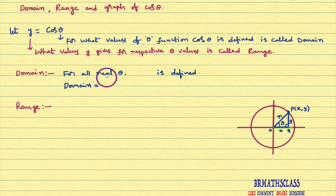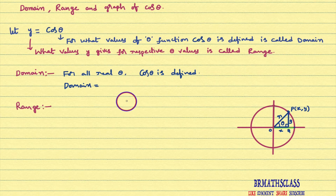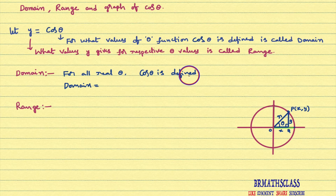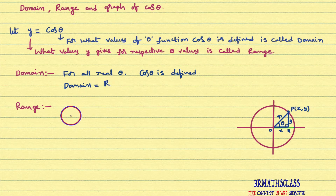For all real numbers, cosine function is defined. For all real values, cos theta is defined — cos 0 degrees, cos 90 degrees, cos minus 90 degrees, cos 1000 degrees, cos 1 crore degrees are all defined. Sine function is also defined for all real numbers. So for all real theta, cos theta is defined. Domain of cosine function is all real numbers.